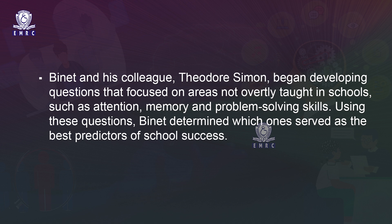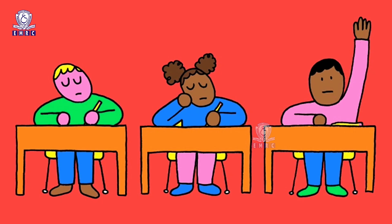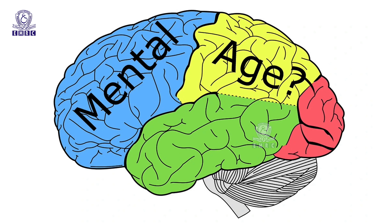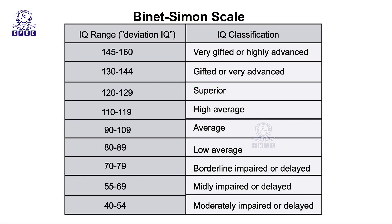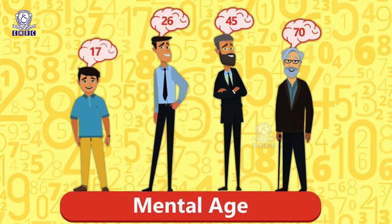Using these questions, Binet determined which ones served as the best predictors of school success. He realized that some children were able to answer more advanced questions that older children could generally answer. Based on this observation, Binet suggested the concept of mental age — a measure of intelligence based on the average abilities of children of a certain age group. In 1908, when the Binet-Simon scale was revised, they introduced the concept of mental age (MA), defined as a measure of a person's intellectual development relative to people of his or her age group.